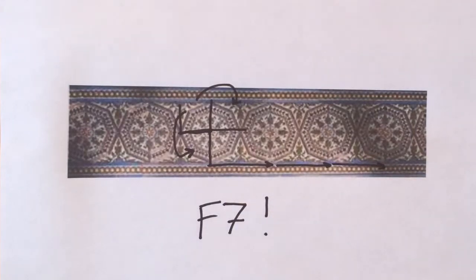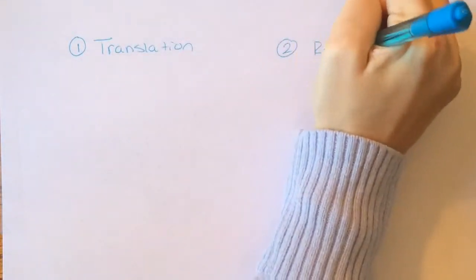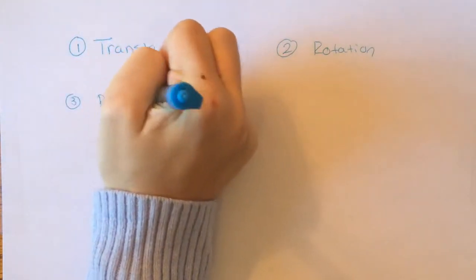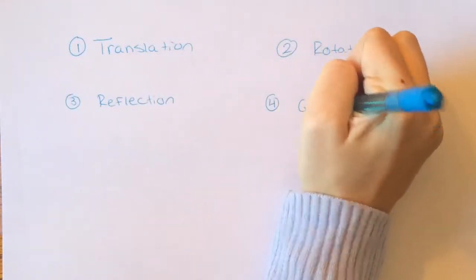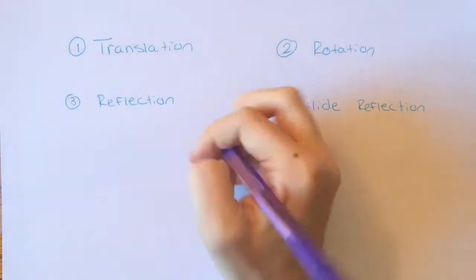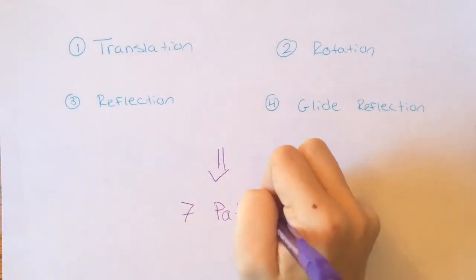Because frieze patterns are constructed using only four operators, each complicated looking design is easy to classify. Let's recap: there are four operators used to create frieze patterns — translation, rotation, reflection, and glide reflection. A combination of these operators results in seven distinct patterns. We also showed how simple it is to classify these patterns.